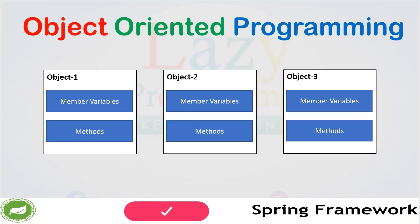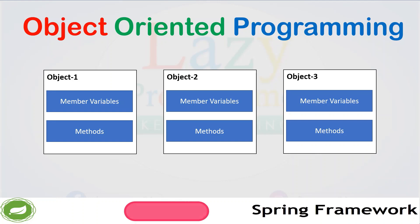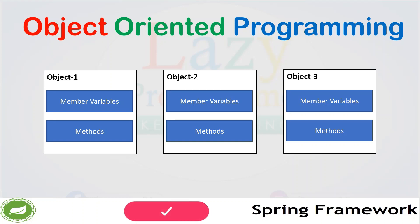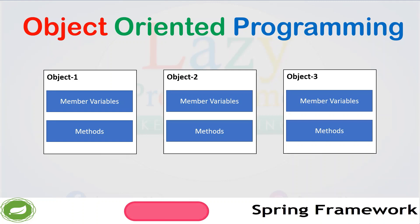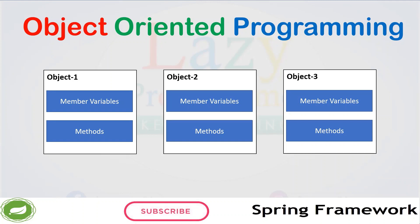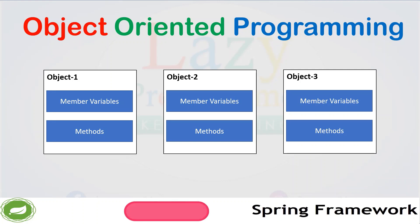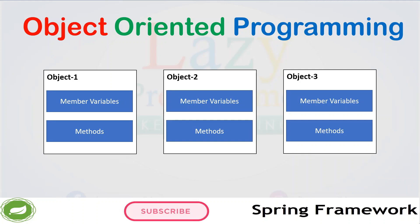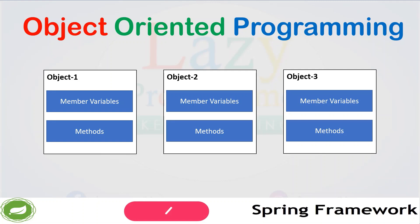Methods depict the behavior that a particular object can have. In the vehicle class, we can have an accelerate method that defines the behavior of accelerating the speed, and a change-gear method that updates the member variables. That method itself is depicted as a behavior of the vehicle. By using this programming paradigm, we are able to contain the complexity problem to a very high extent.